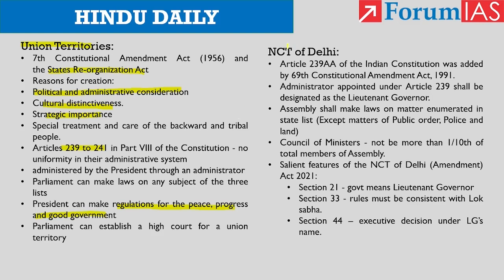Coming to the constitutional provisions for Delhi: Article 239 of the Indian Constitution says a union territory shall be administered by the president through an administrator appointed by him. In the case of Delhi, a lieutenant governor is appointed by the president. Under Article 239AA, added by the 69th Constitutional Amendment Act of 1991, the union territory of Delhi shall be called the National Capital Territory of Delhi and the administrator shall be designated as lieutenant governor. There will be a legislative assembly for the NCT, which shall make laws on matters enumerated in the State List except three subjects — public order, police, and land — which will be taken care of by the union government.